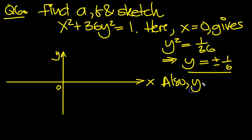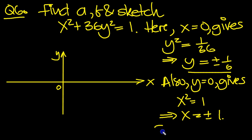Let's put in y equals 0 now. See what that gives. So put y equals 0 in here. We get x squared equals 1. Square root both sides, x equals plus or minus 1. So a is equal to 1, and b is equal to a sixth.